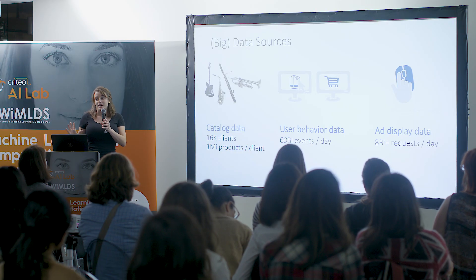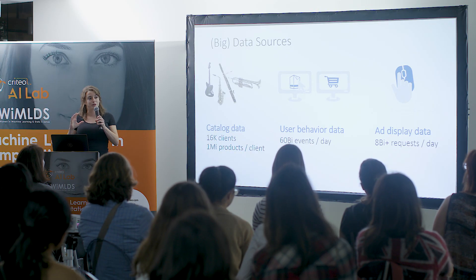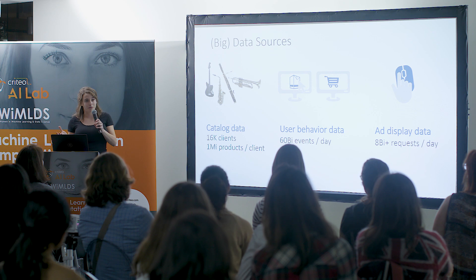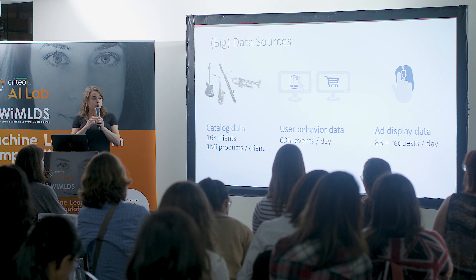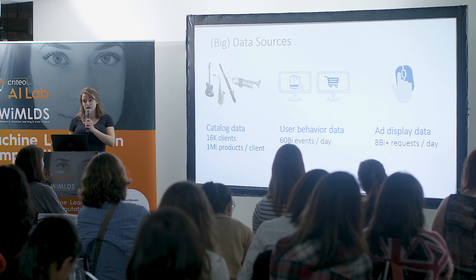One of the most exciting things at Criteo is all the data we can play with. In terms of catalog, we have 16K clients with an average of 1 million products. We receive about 60 billion events a day — all the browsing data from all of our advertisers. And we receive about 8 billion requests for recommendation a day.